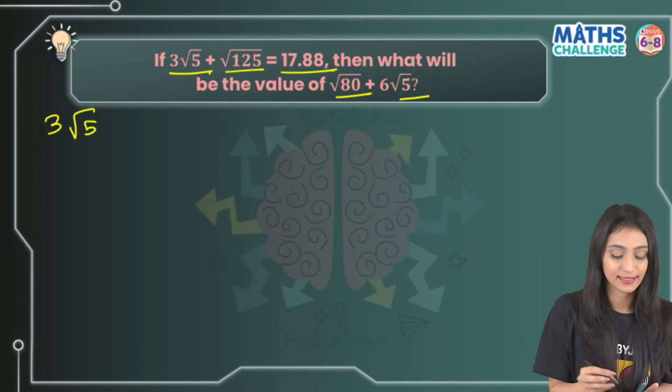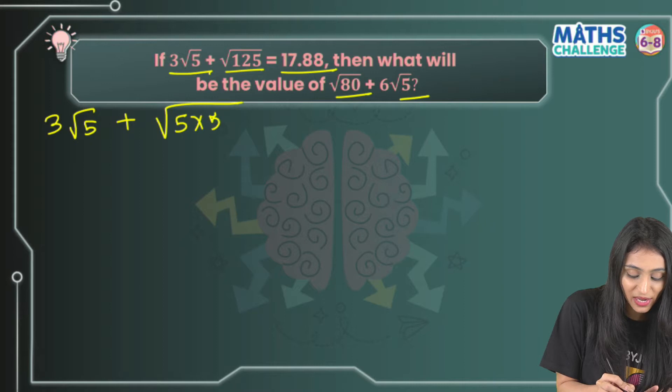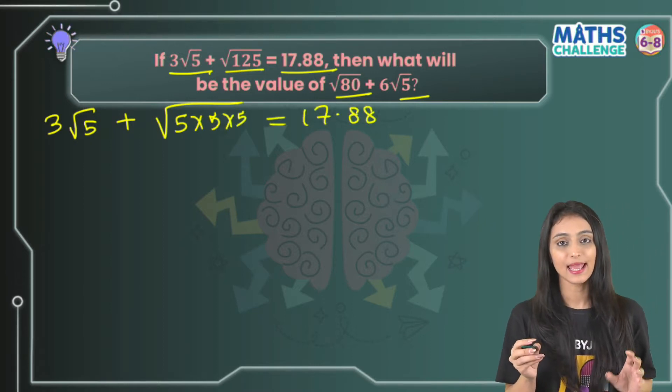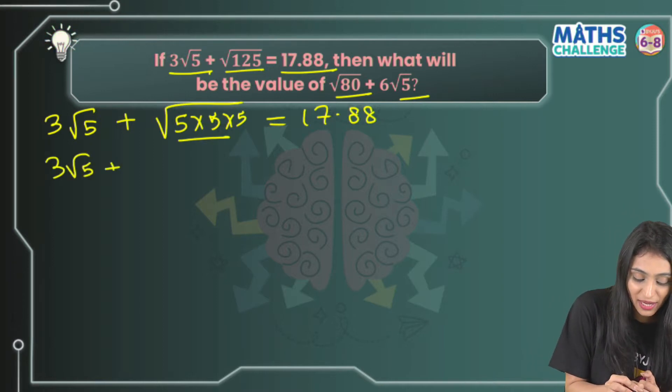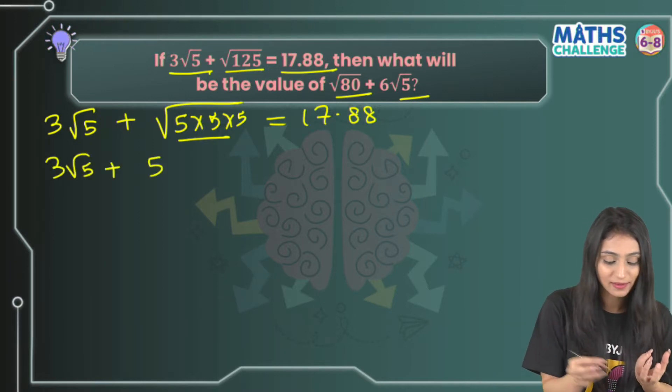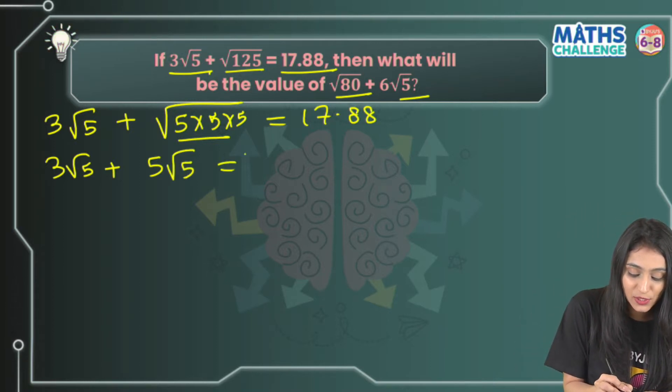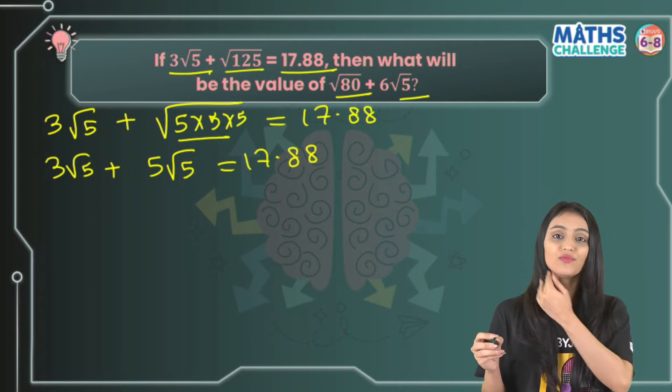3√5 stays as is. √125 can be written as √(5×5×5) = 17.88. We know a pair is formed, so this becomes 3√5 + 5√5 = 17.88, because when a pair is formed the 5 comes out. That's how you find square roots.